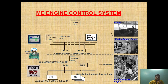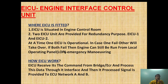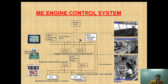Let's discuss EICU first. EICU is situated in the engine control room. Two EICU units are provided for redundancy purposes — EICU 1 and EICU 2. The command from the bridge panel passes through the main operating panel and comes to EICU A or EICU B. Two units are provided so that if one fails, the other takes over and engine performance is not hampered.